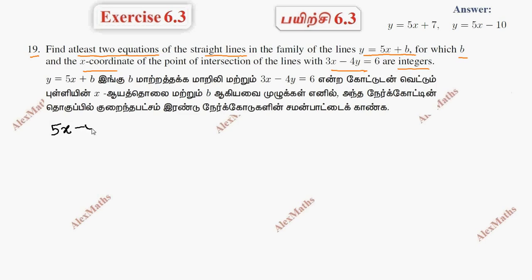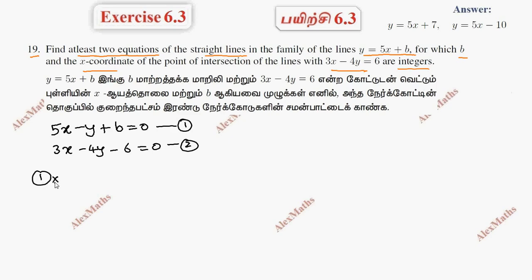First equation rearranged: 5x minus y plus b equals 0. Second equation: 3x minus 4y plus 6 equals 0. If we multiply the first equation by 4, we get 20x minus 4y plus 4b equals 0.